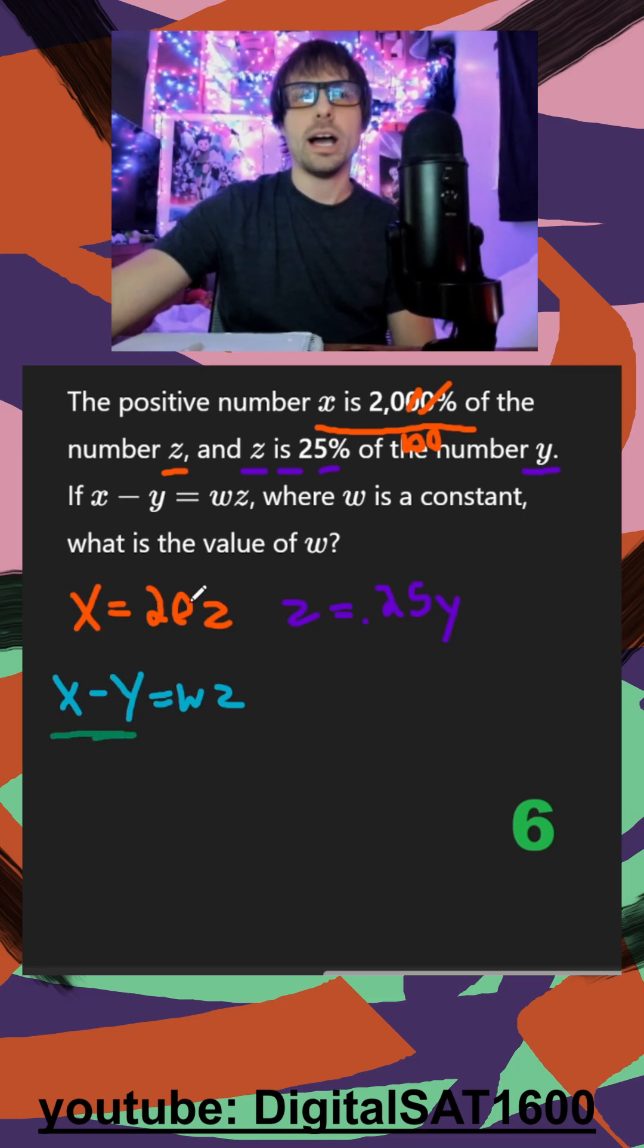So first, I want to connect x to y. I see x is equal to some sort of z, and z is equal to some sort of y. So what I can do is just plug in 0.25y for this z. So if I move this equation down here, x is equal to 20 times z, which is the same thing as 0.25y.